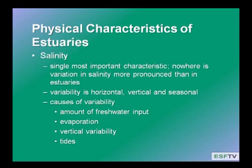The first and most important abiotic factor is salinity. These are the most variable places on Earth in terms of their salinity content. Salinity variability is horizontal from the river to the sea, vertical from the surface to the bottom, and seasonal as we get different amounts of freshwater input. The things causing this variability include the amount of river input, warm or arid climate with high evaporation, vertical stratification patterns of salt and freshwater, and the tidal pattern pushing salt wedges into the estuaries.